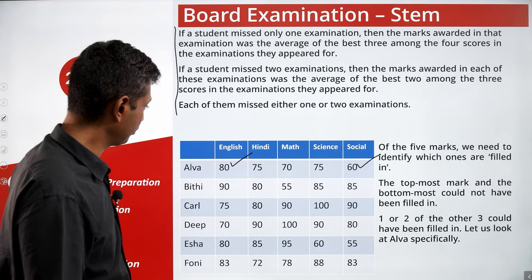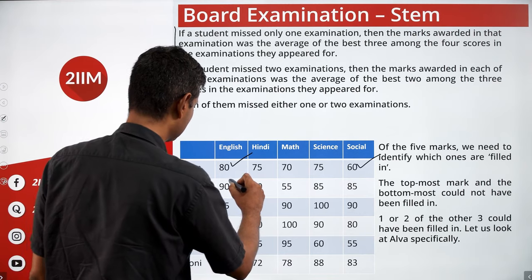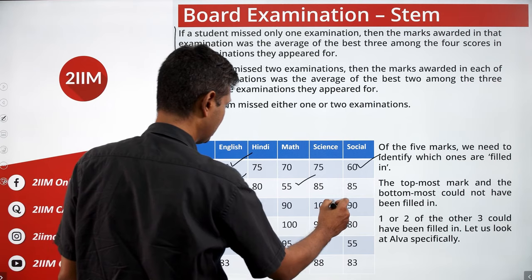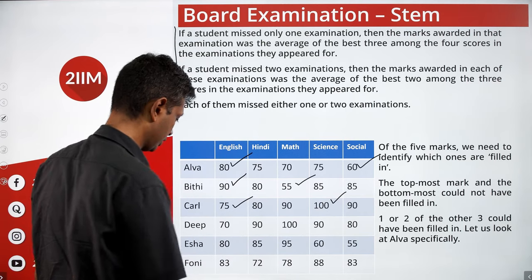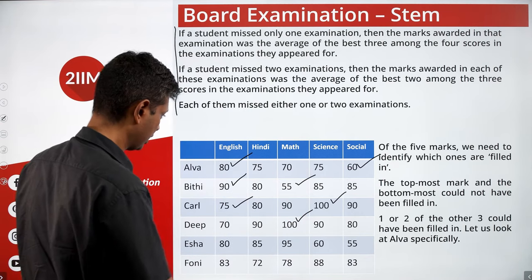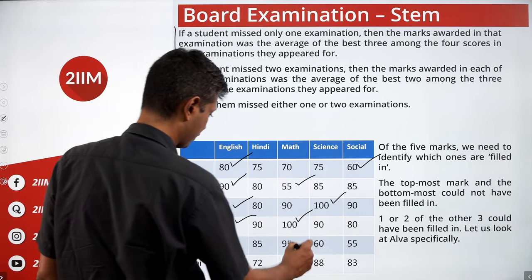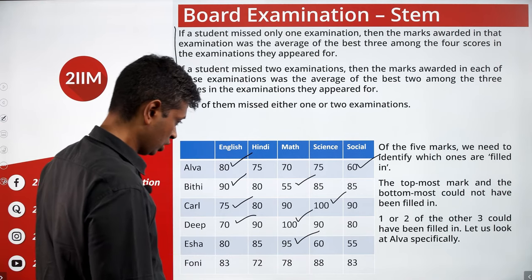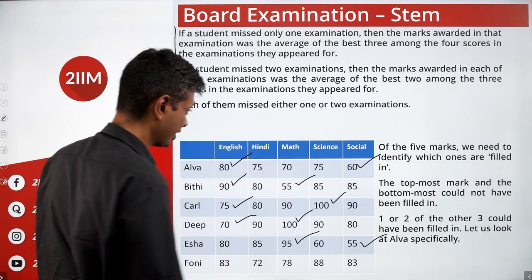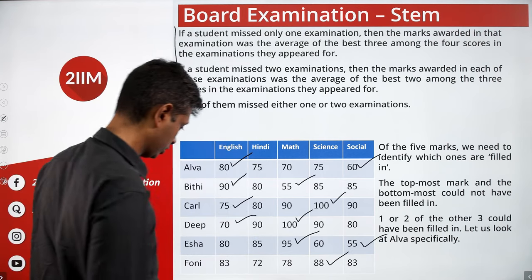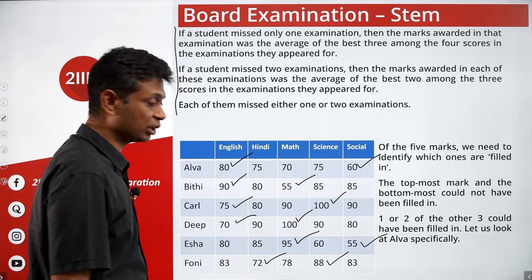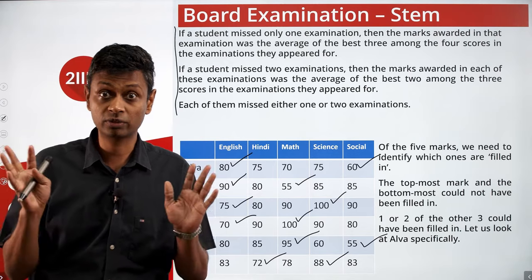So Biti has definitely taken English. Kal has definitely taken Science and English. Deep has definitely taken Math and English. Isha has definitely taken Math and Social. Phony has definitely taken Science and Hindi. The top and bottom scores for each student cannot be averages of some numbers.